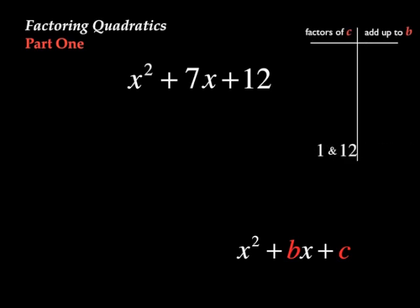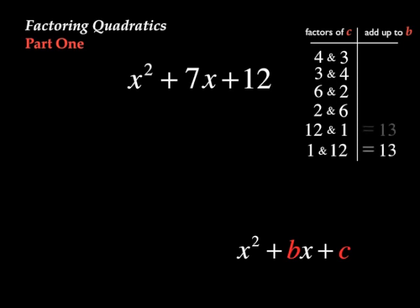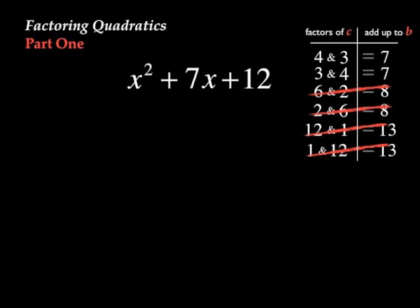We'll start by listing these factors. 1 and 12, 12 and 1, 2 and 6, 6 and 2, 3 and 4, and 4 and 3. Then we'll add. We can immediately see that 12 and 1 add up to 13. Those won't work. The 6's and the 2's will add up to 8. These won't work. And we can see that the 3's and the 4's, adding up to 7, will be the ones we'll use.